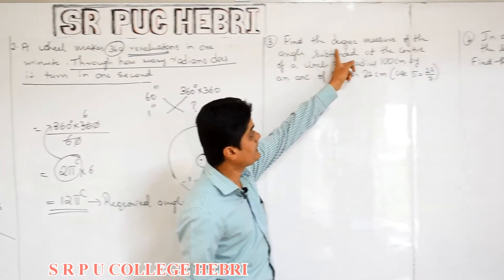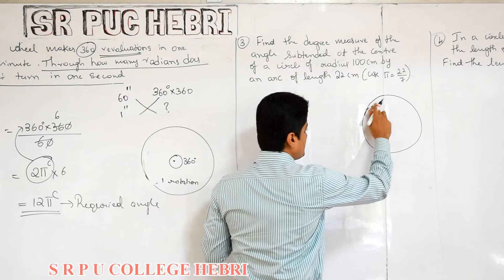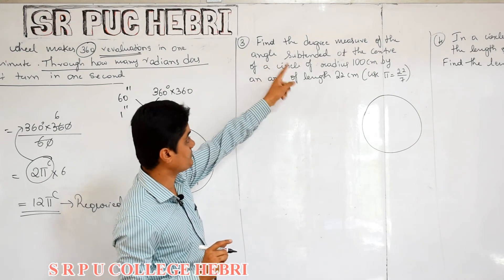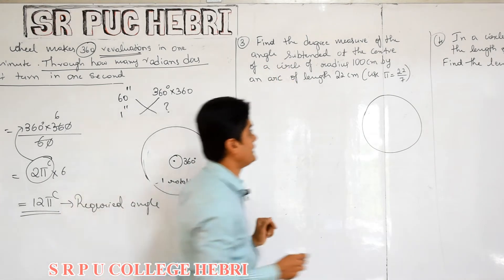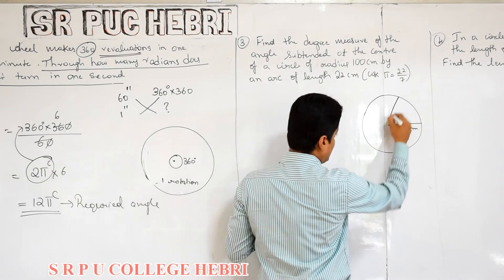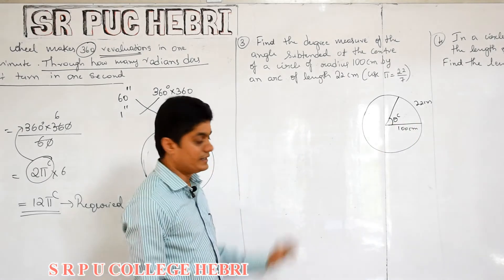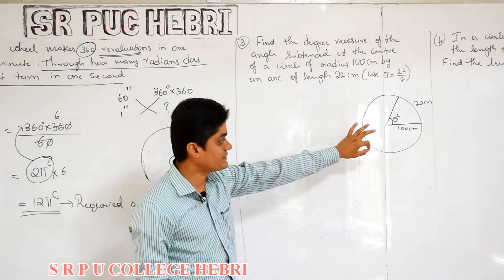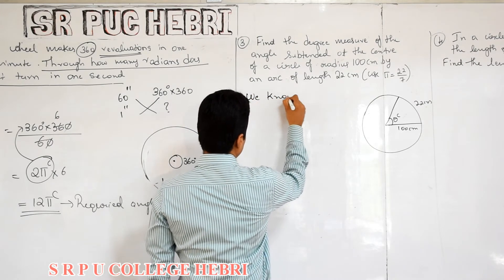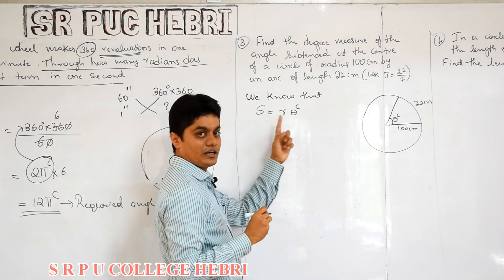Read the question: find the degree measure of the angle subtended at the center of the circle of radius 100 centimeter by an arc of length 22 centimeter. Draw one rough diagram — not compulsory in exam. Radius is 100 centimeter, arc length is 22 centimeter. Only you have to find the angle at the center. What formula do we know? S is equal to R theta radian.